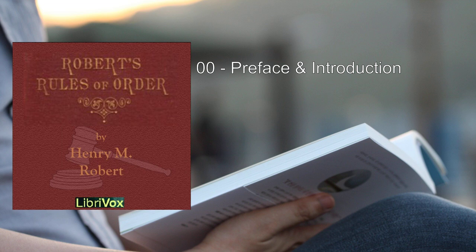Preface. There appears to be much needed a work on parliamentary law based in its general principles upon the rules and practice of Congress, and adapted in its details to the use of ordinary societies. Such a work should give not only the methods of organizing and conducting the meetings, the duties of the officers and the names of the ordinary motions, but in addition should state in a systematic manner, in reference to each motion, its object and effect, whether it can be amended or debated.